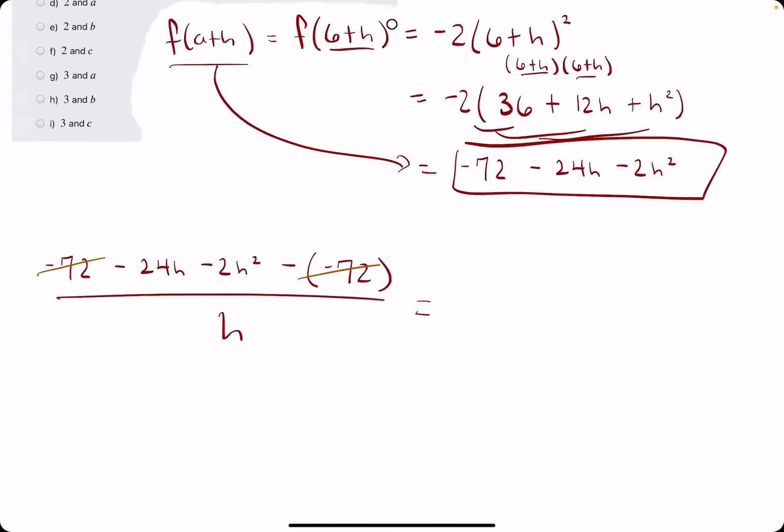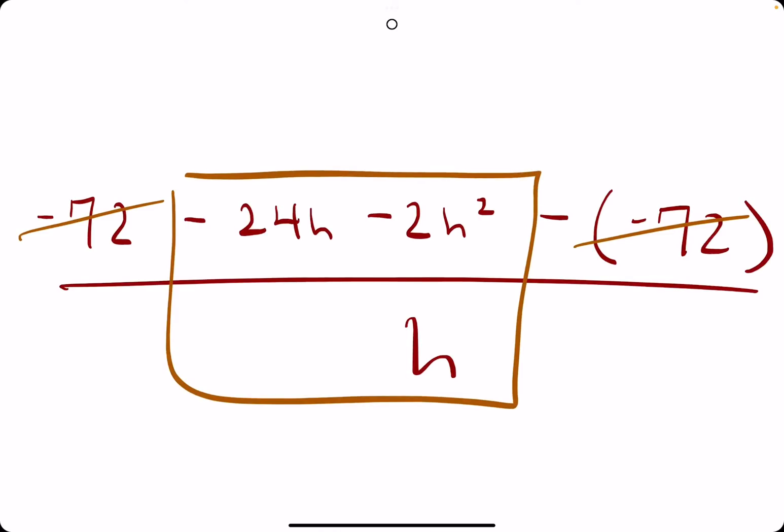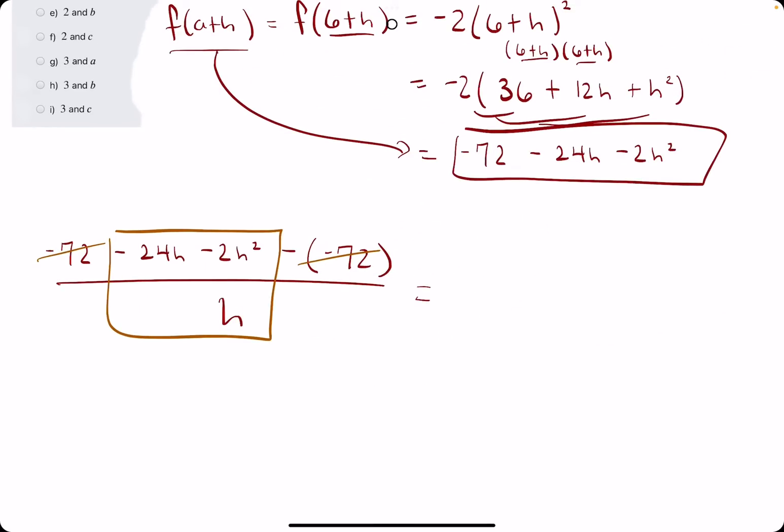and we're left with basically just this. And then we can always cancel an h from all the terms on top, leaving us with negative 24 minus 2h.